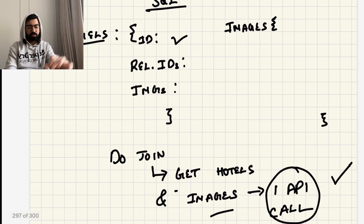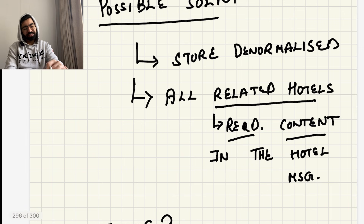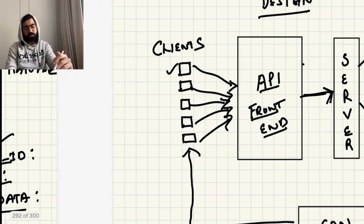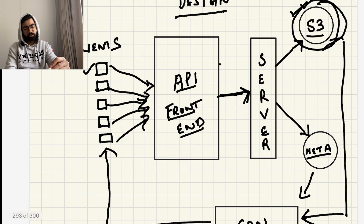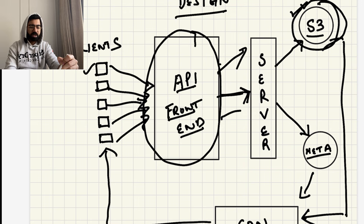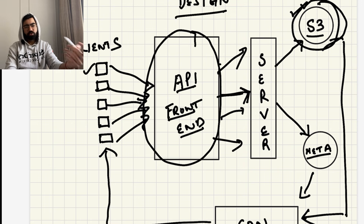So now you have a fully designed system that can serve images at scale. We can further discuss how the API frontend should look — including a load balancer to balance the load across servers making these calls — but I will discuss that in a separate video. Let me know your suggestions.